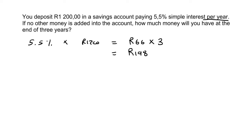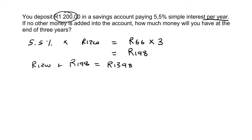So how much money will you have? You'll have 1,200 plus the amount that you've earned over the 3 years. So you'll have a total of 1,398 rand. That is the answer for that one.